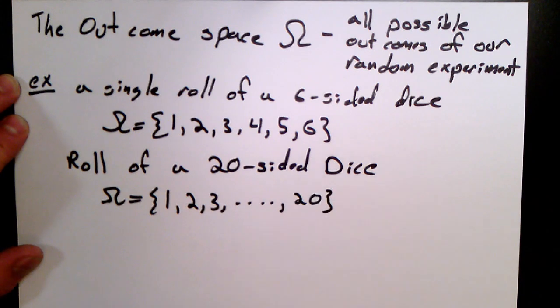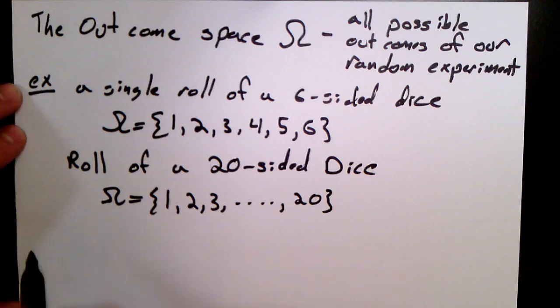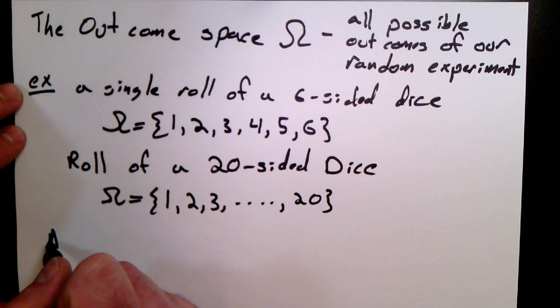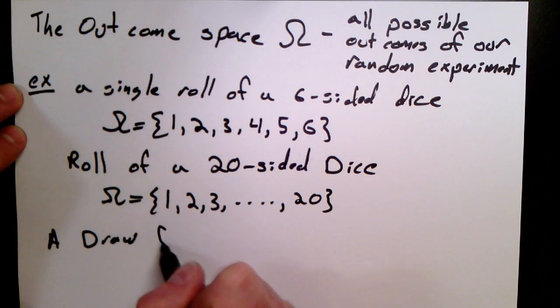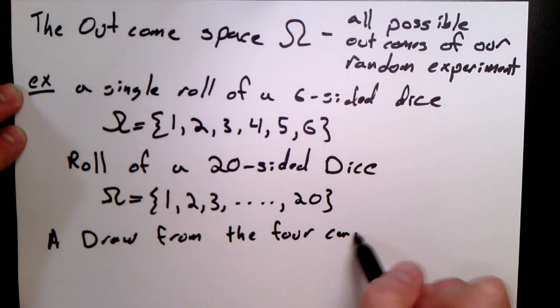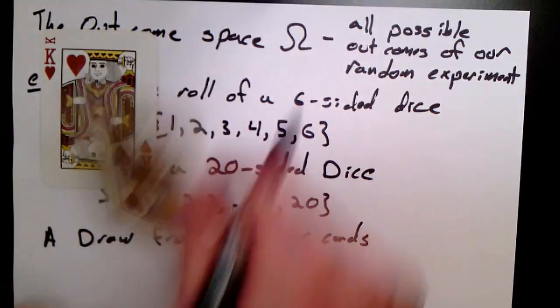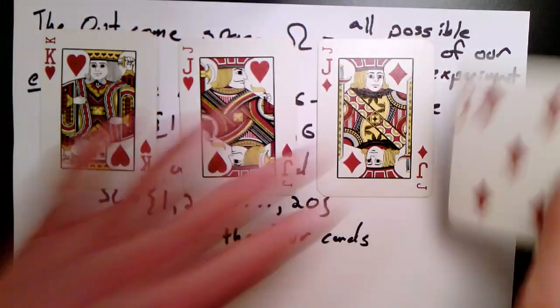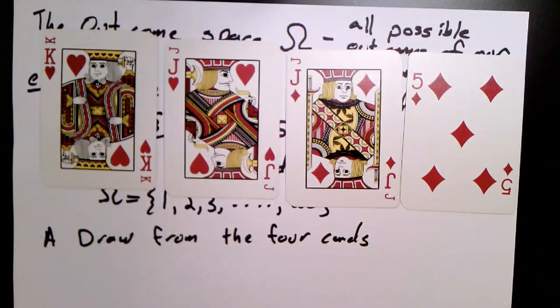Now, how we define the outcome space is somewhat a choice, but what we need to just pick some notation and define it. So, for instance, in the case of the four cards I dealt out before, the outcome space might be thought of as just four sets of symbols, each referring to one of the cards. So we have the king of hearts, the jack of hearts, the jack of diamonds, and the five of diamonds.